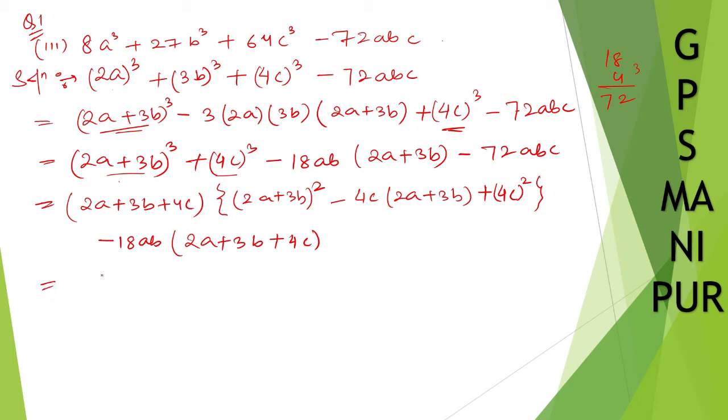Now if you take 2a plus 3, this one common, 2a plus 3b plus 4c take common. If you take common what is left out, what is this one a plus b whole square, it will be a square plus twice a b plus b square.